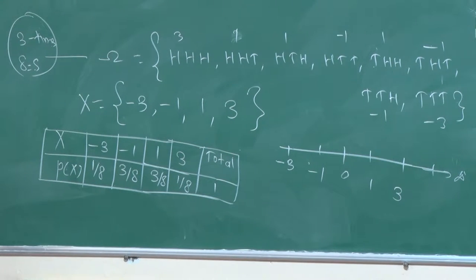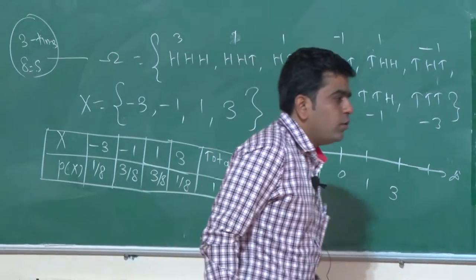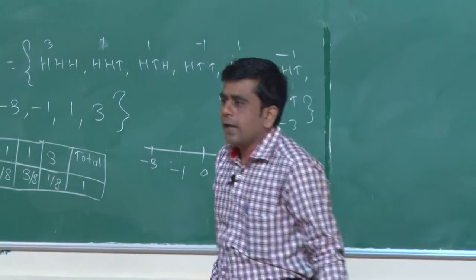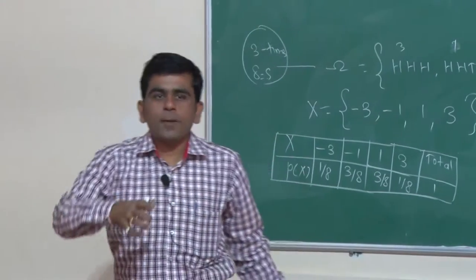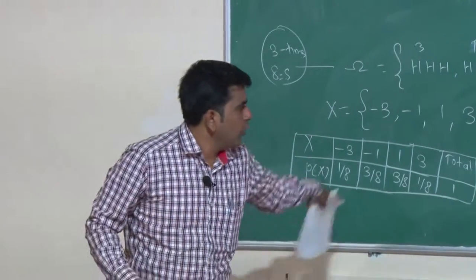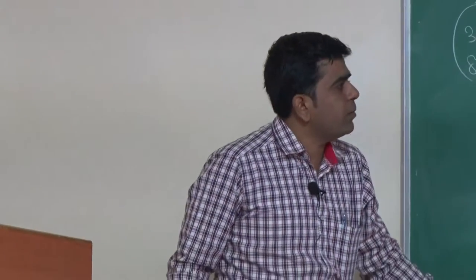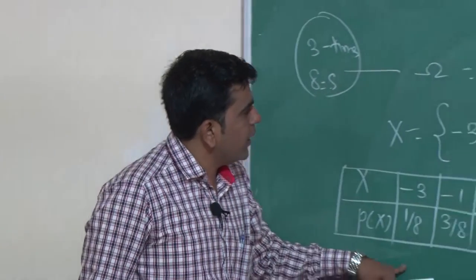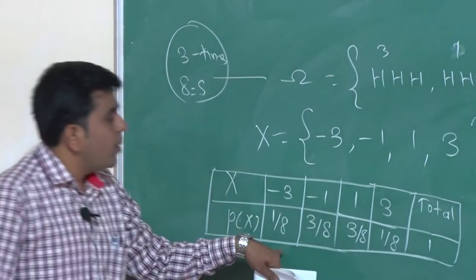This is the mapping of sample points for this experiment: tossing a coin three times, we will get 8 sample points; we just have to map every sample point on your real line. So X is the random variable which will give the difference between number of heads and tails. Over this random variable we will get minus 3, minus 1, 1, and 3 with these probabilities.